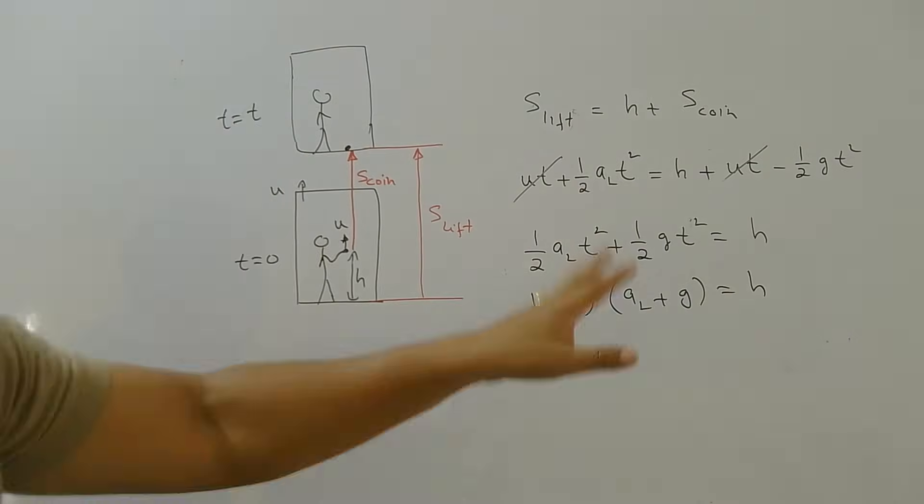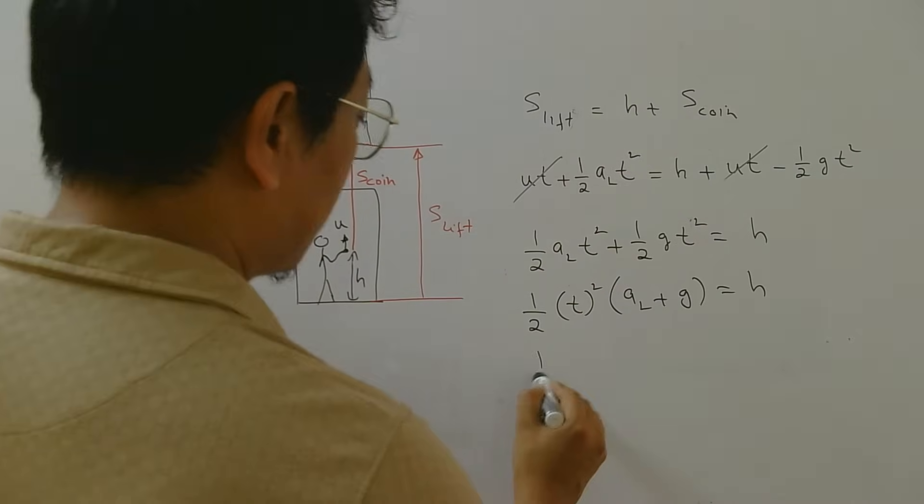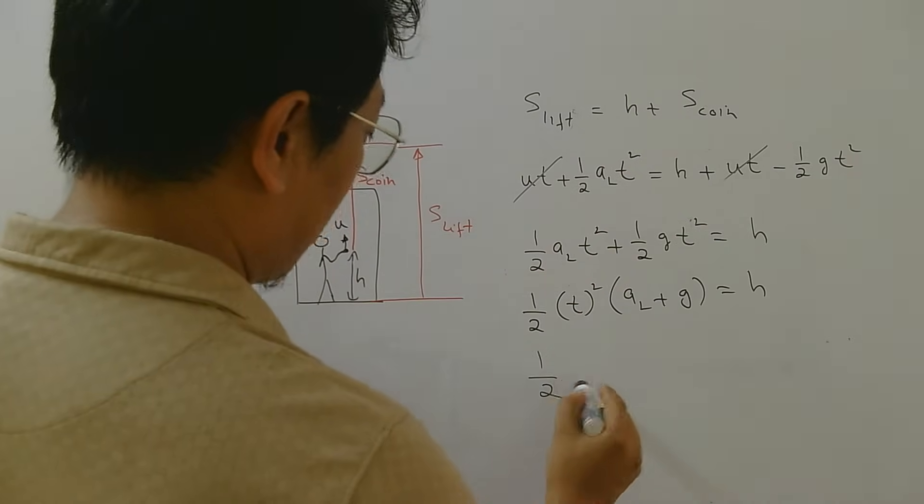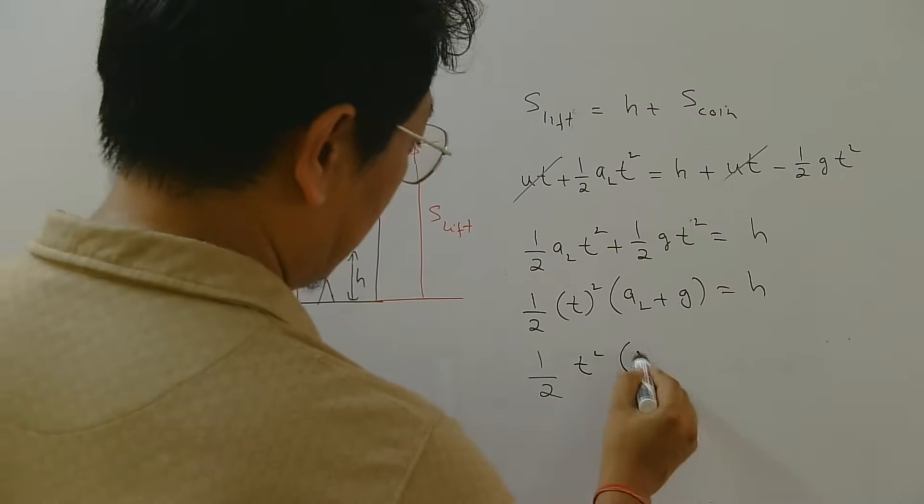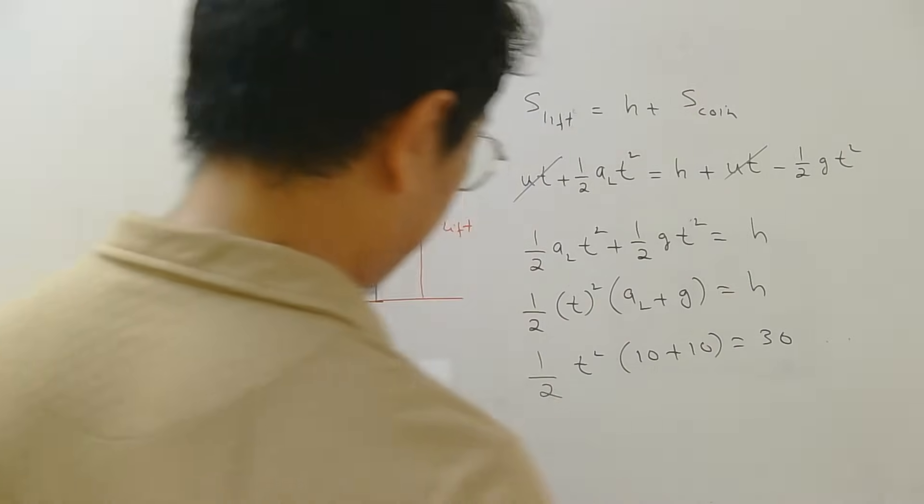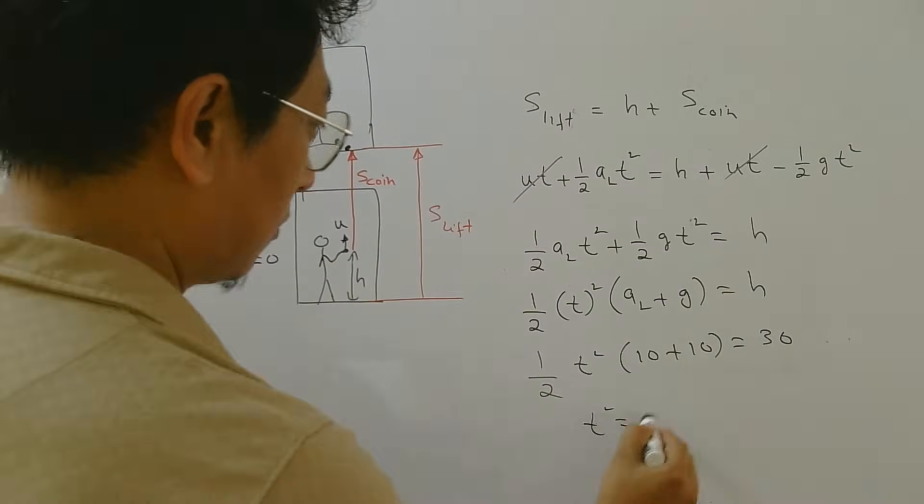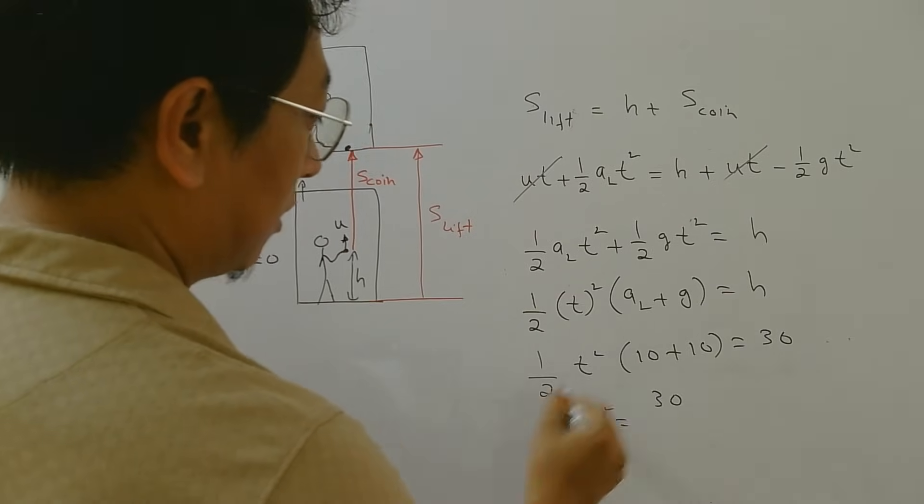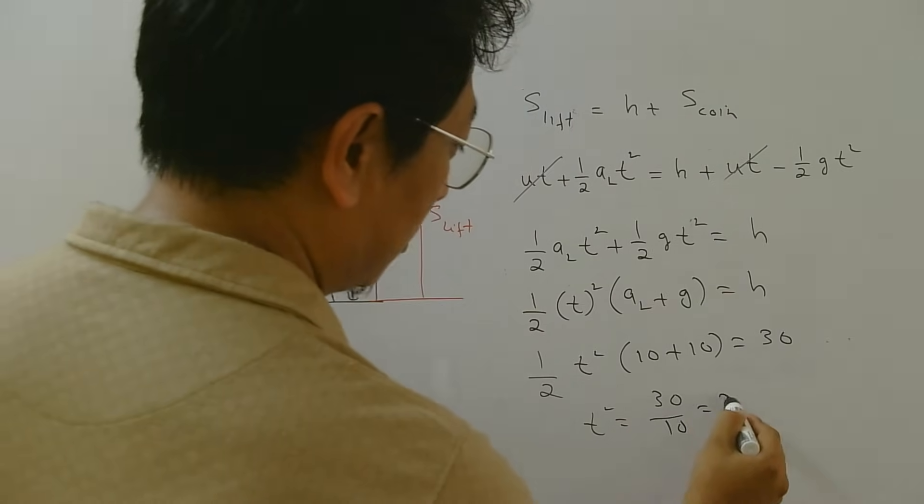Right. So here already sign we have taken here. So half t square. We do not know. a_l was 10, g was 10, h was 30. So t square will be 30. This is 20 by 2 is 10. So you will get same answer.